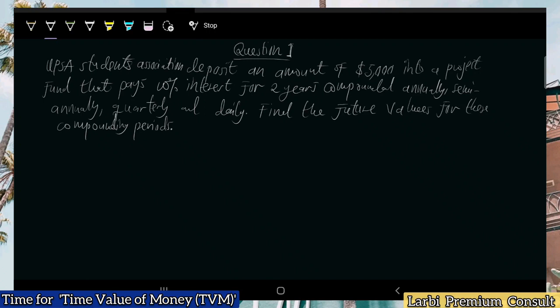In our previous video we started with the concept of time value of money — we explained what time value of money is, the factors pivoted to it, and how the calculation is done. We defined the general formula: future value equals present value multiplied by the future value factor, which is one plus the interest divided by the compounding period, all raised to the power of compounding period multiplied by the time horizon.